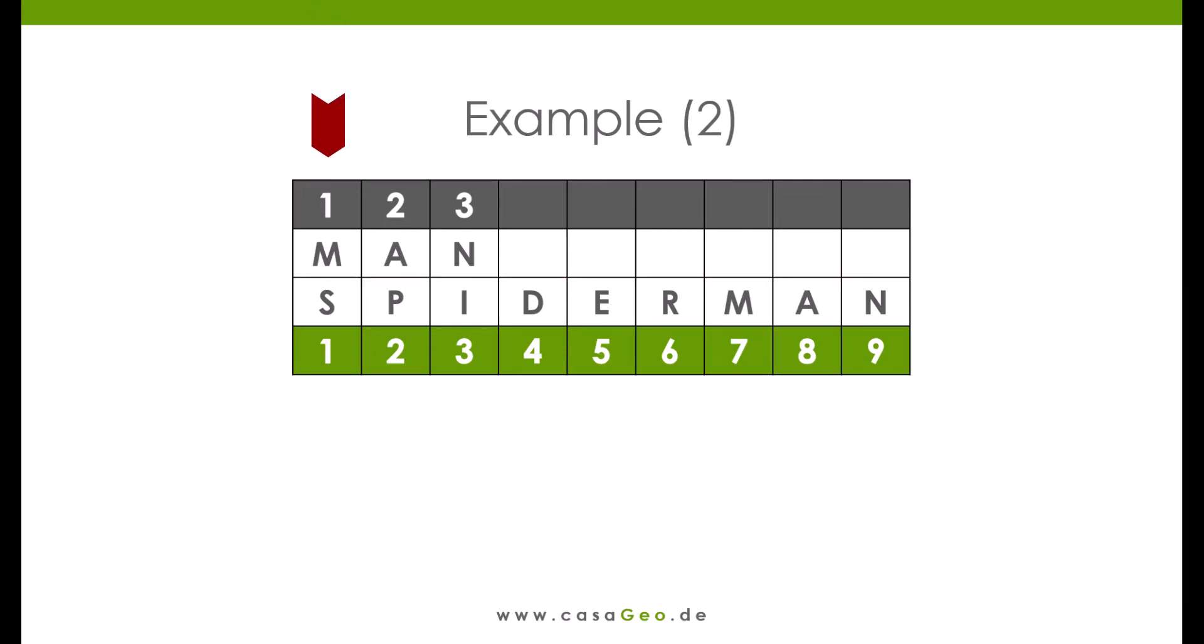The letter M in man has the position 1 and in Spider-Man the position 7. Thus, the distance between the letters M in man and Spider-Man is 6 and, accordingly, the letters do not fit together according to Jaro. The same applies to the letters A and N.